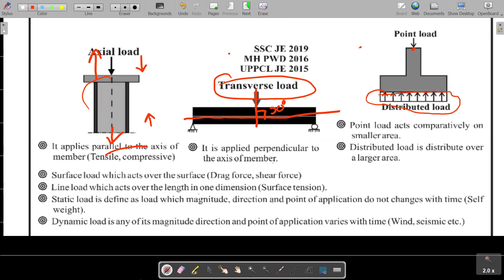Drag force and shear force are basically surface loading. Line load is a load which acts over length in one dimension. Surface tension we can consider as a line load because it acts over the length, and it's force per unit length.